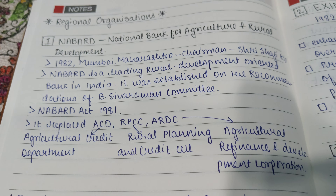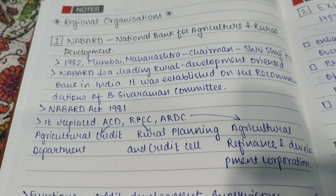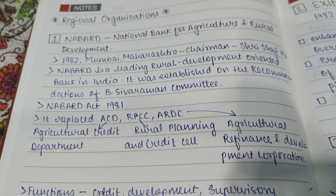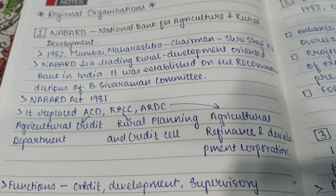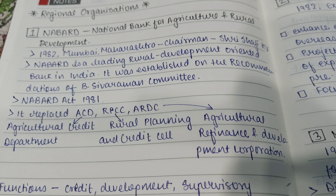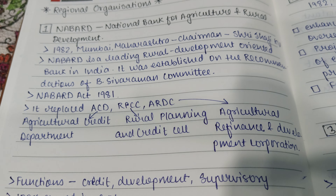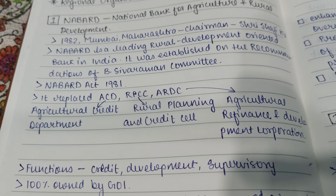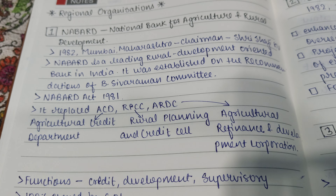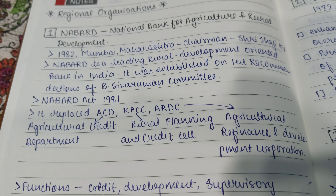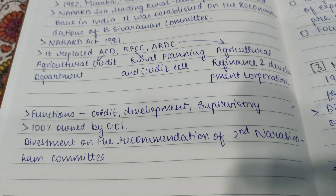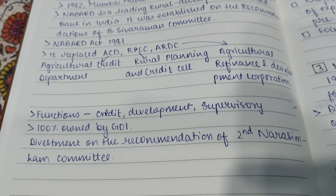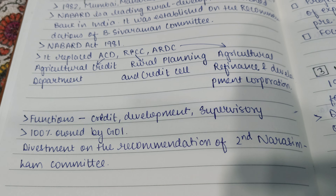NABARD replaced three organizations: ACD, RPCC, and ARDC. ACD is the Agriculture Credit Department, RPCC is the Rural Planning and Credit Cell, and ARDC is the Agriculture Refinance and Development Corporation. These organizations existed before NABARD, and now NABARD has taken over all their functions.